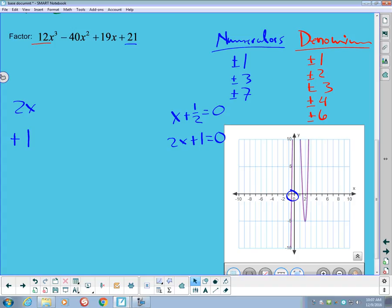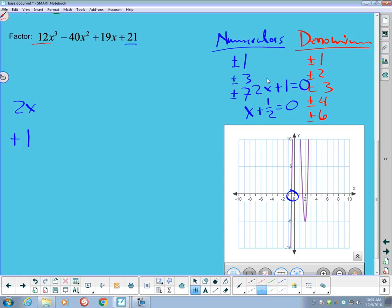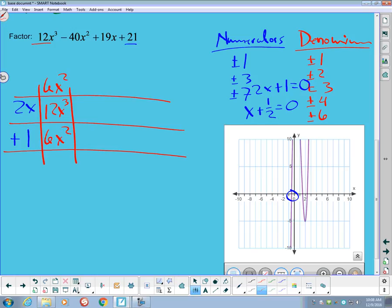That would indicate that the x plus 1/2 was equal to 0. Or if I got rid of the fractions, that's a 2x plus 1. It is equal to 0. So I am going to try to divide this thing by 2x plus 1. I am going to move some of these things out of the way.